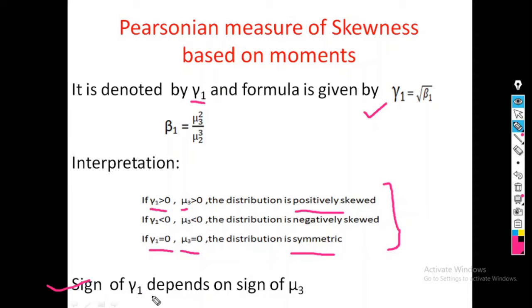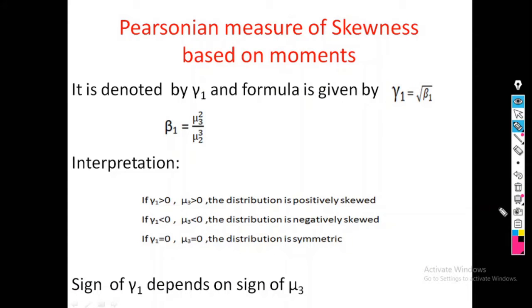Note that the sign of gamma 1 depends on the sign of mu3. To calculate gamma 1, we first find mu3, the third central moment. If the third central moment is negative, then gamma 1 is given a negative sign. If mu3 is positive, then gamma 1 is also positive.